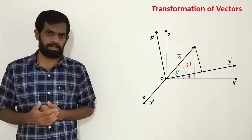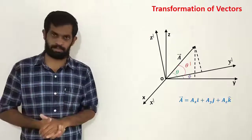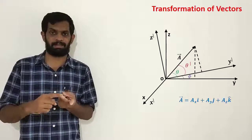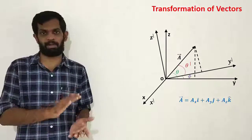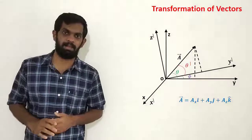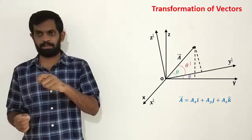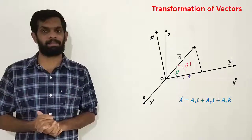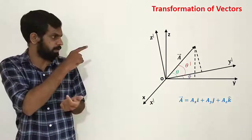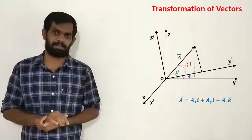This is the vector A. In the original coordinate system, the unit vectors in the x, y, and z directions are used. In the new (primed) coordinate — x-bar, y-bar, z-bar — vector A is represented with new components. The projection of A onto each axis gives the new components ax-dash, ay-dash, and az-dash.